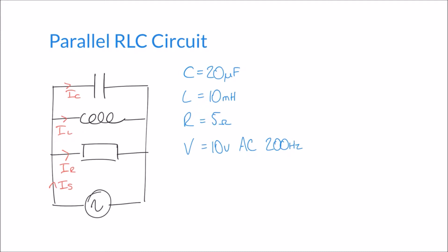First of all we need to recognize that we have two reactive components — an inductor and a capacitor — and both are going to have a reactance. XC, the reactance of a capacitor, is equal to 1 over 2πfC. Substituting values: 1 over 2π times 200 times 20 times 10 to the minus 6, which gives a reactance of 39.79 ohms.